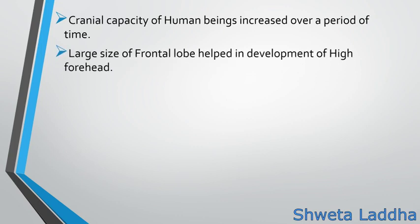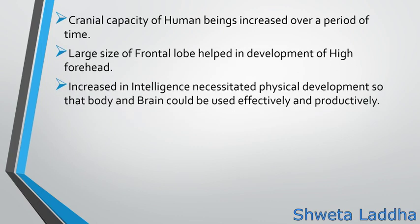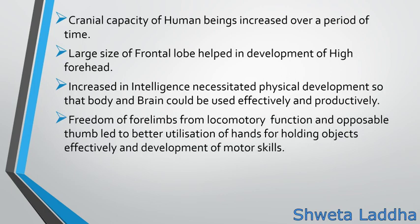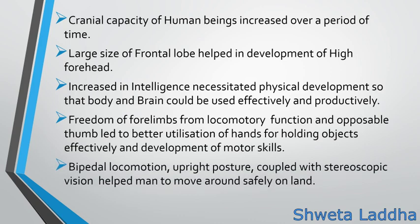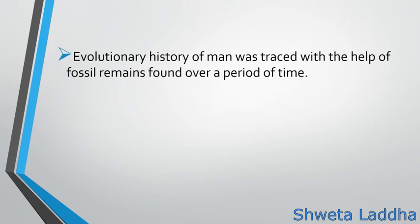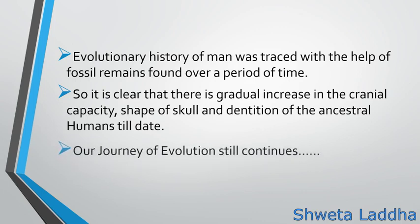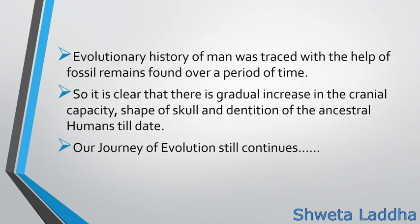Let us see some characters of Homo sapiens. Cranial capacity increased over time. The large size of the frontal lobe helped in the development of a high forehead. Increased intelligence necessitated physical development so that body and brain could be used effectively. Freedom of the forelimbs from locomotory function and the opposable thumb led to better utilization of the hand. Bipedal locomotion and upright posture coupled with stereoscopic vision helped man move safely on land. Our evolutionary journey still continues — every new generation is believed to be more intelligent than the earlier one.